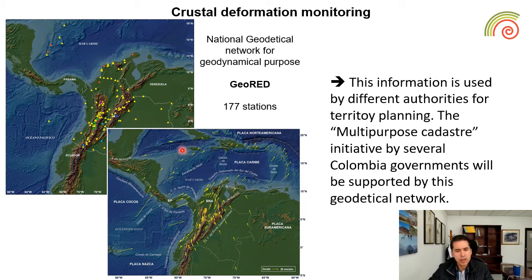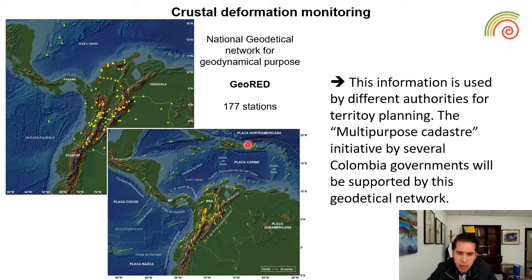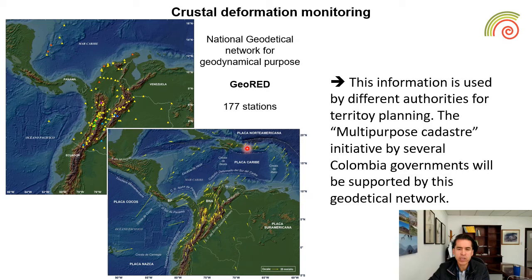The Geo-Red network is also used for the multipurpose cadastre, which is an initiative by several Colombian governments that will be very useful for the future of Colombia in terms of land use planning. The Geological Survey supports this kind of government initiative.